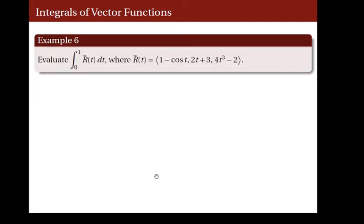Let us look at this example. We want to evaluate the integral of r of t dt from 0 to 1, where the vector function is the vector whose coordinates are 1 minus cosine of t, 2t plus 3, and 4t cubed minus 2. For this problem, what we need to do is to compute the definite integral from 0 to 1 of each of the coordinates.